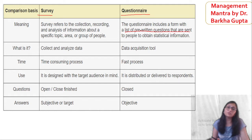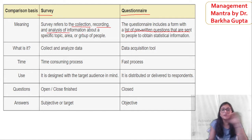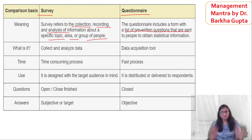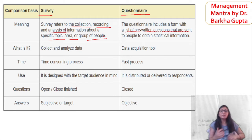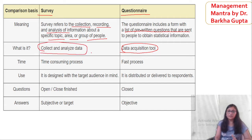But what happens in the survey? When you do a survey, it involves collection, recording, and analysis of information about any specific topic, any area, or group of persons. All of these things — collection, recording, analysis — are included in the survey. But in the questionnaire, you prepare a set of questions. The questionnaire is a form of data collection tool, but the survey is a method of data collection and analysis.